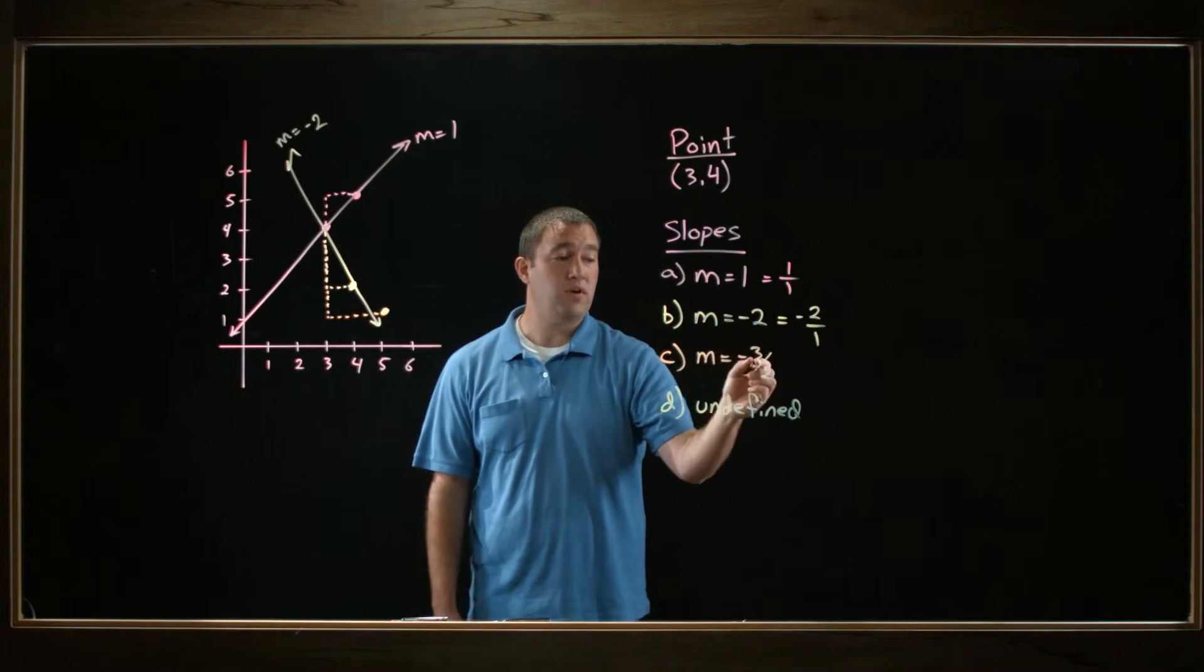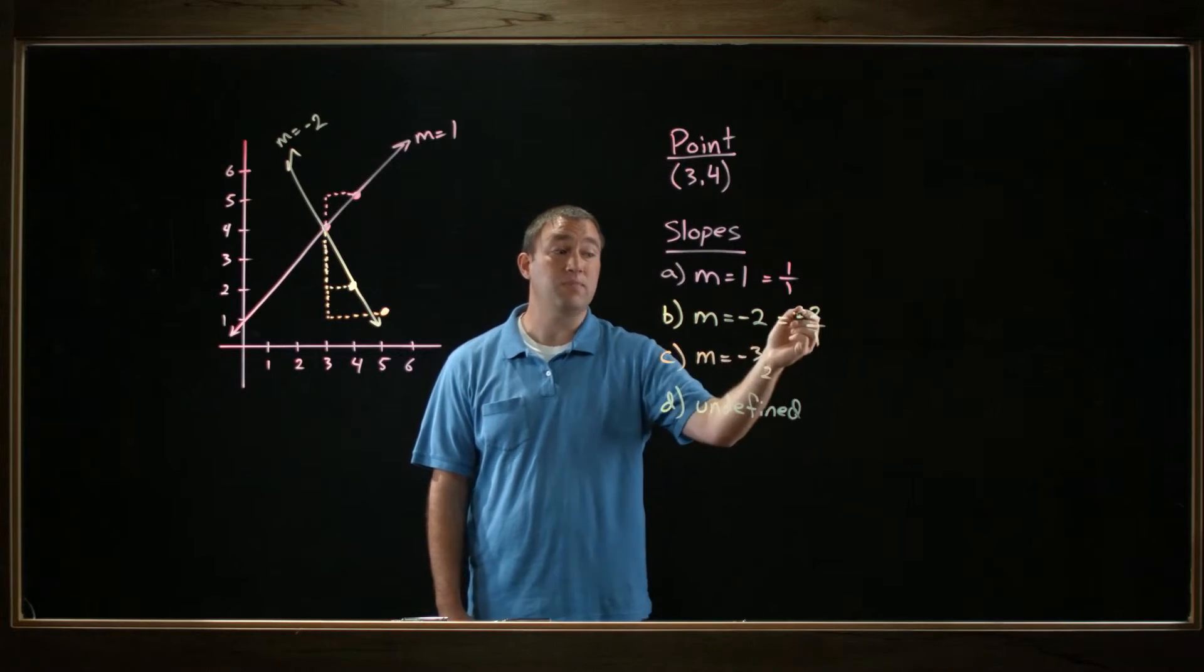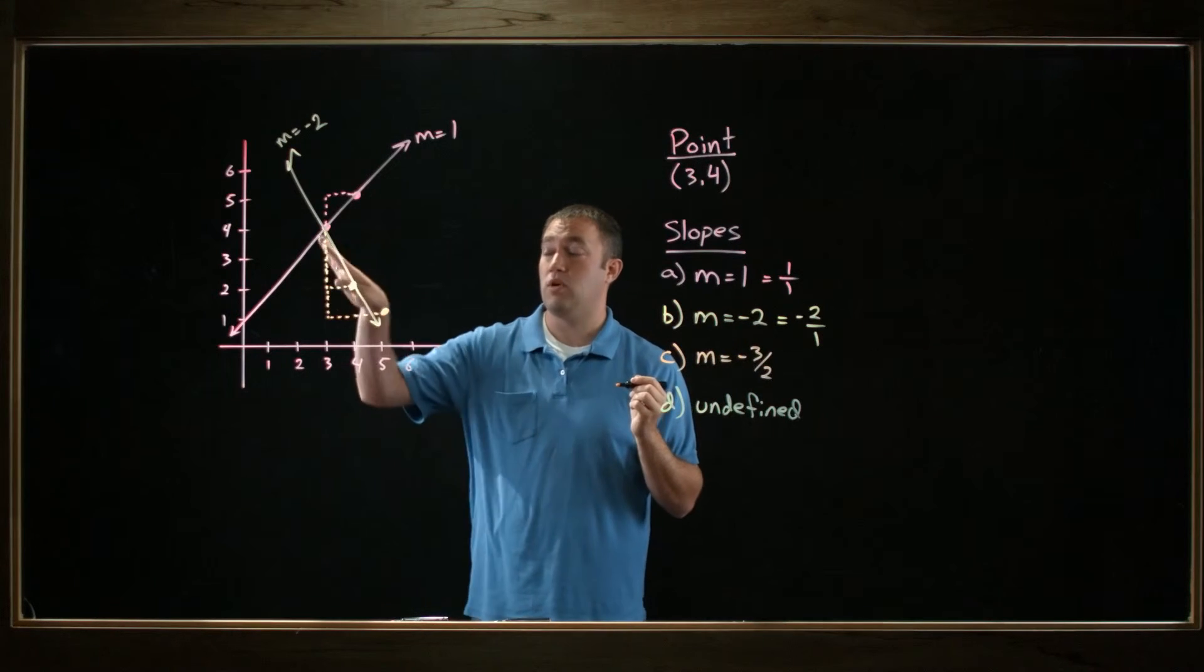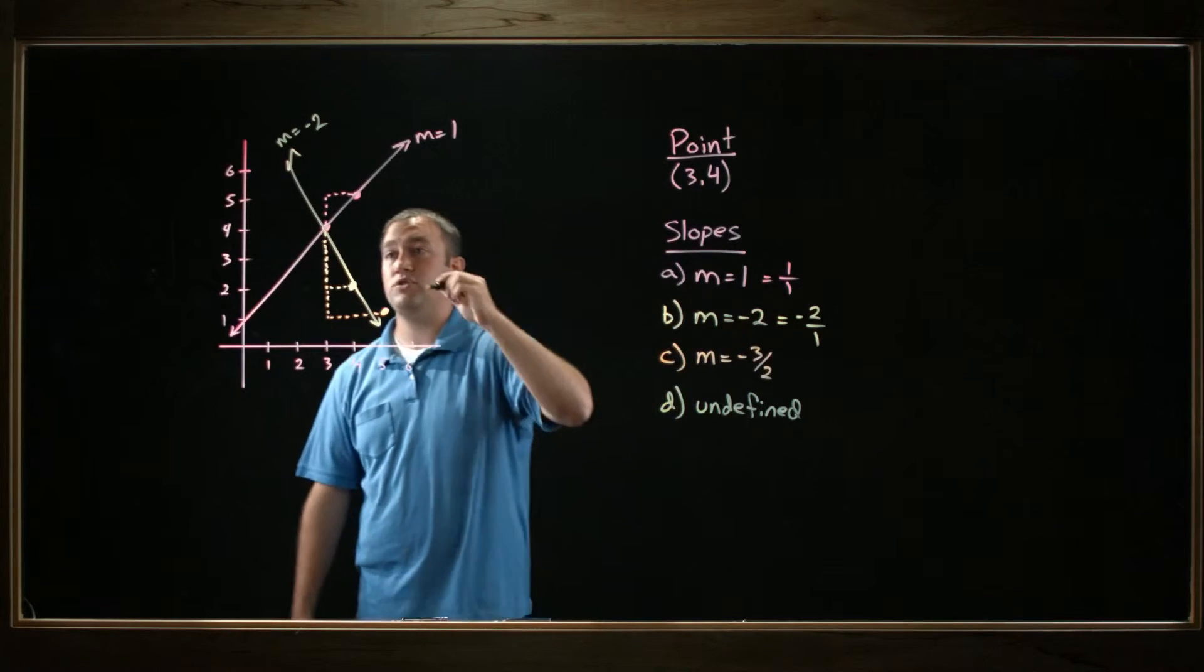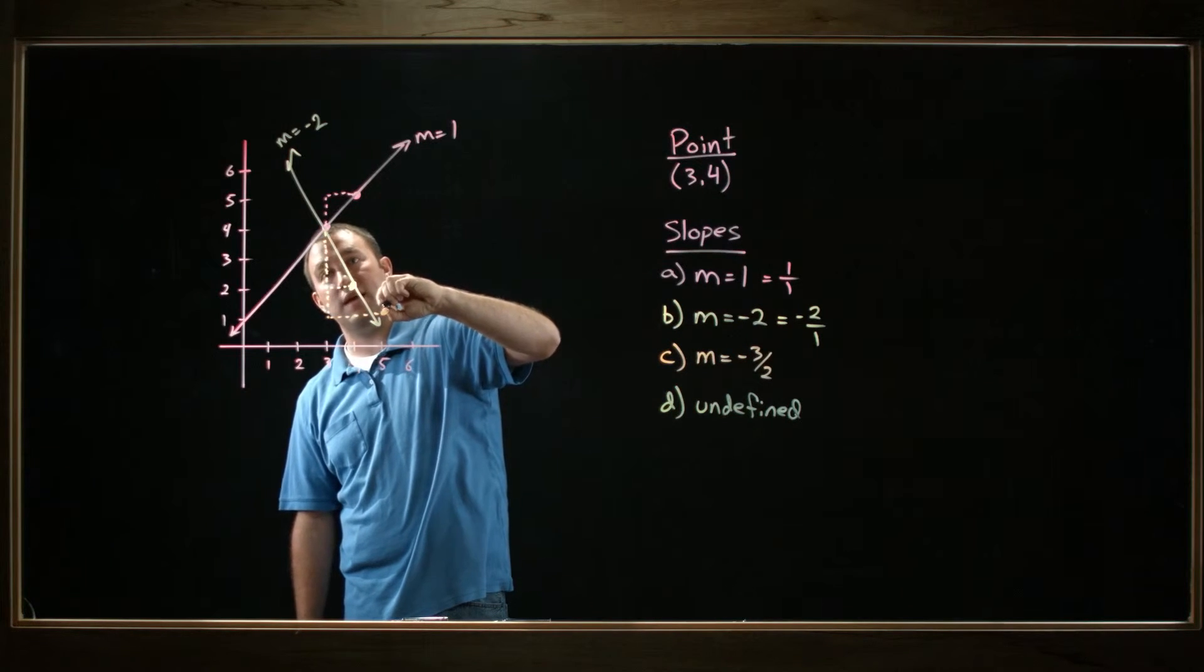Now this line of a slope of negative 3 halves or negative 1 and 1 half, this is going to be less steep than negative 2. So it's not going to be quite as steep, it'll be a little shallower. So I'll draw a straight line connecting these two dots.